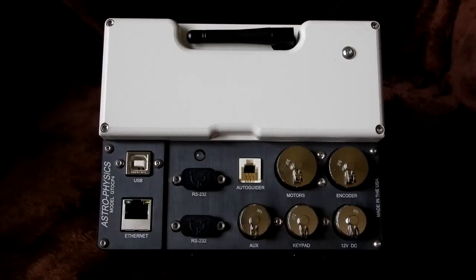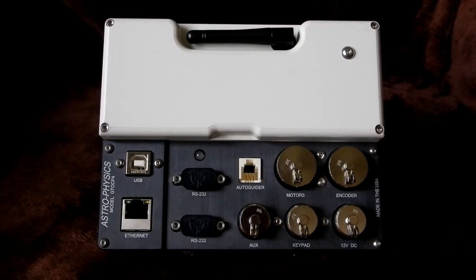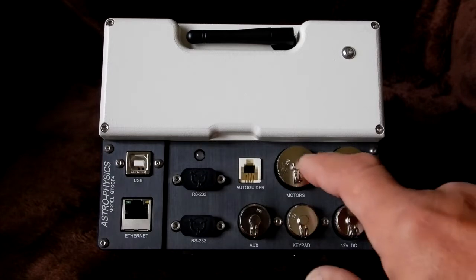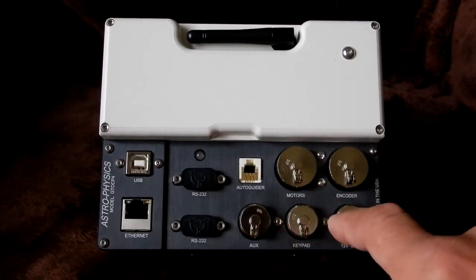Okay, so this is a CP4, the white version. I've got a black one too, but what I wanted to do is get some covers for the Hirose fittings, the connectors that Astro-Physics uses, which you see on the immediate right side—the two big ones here and the three down at the bottom.